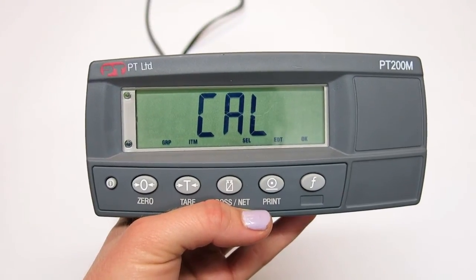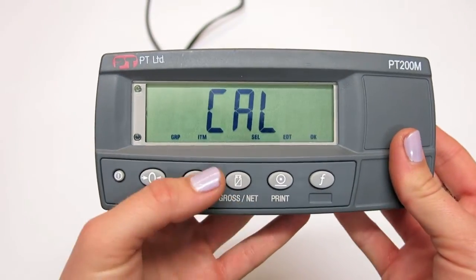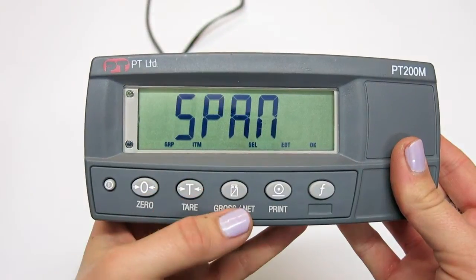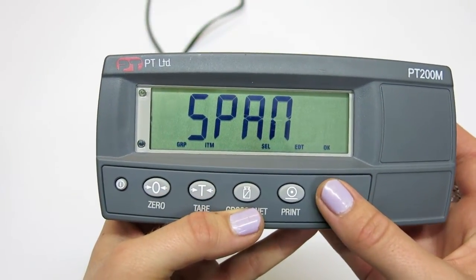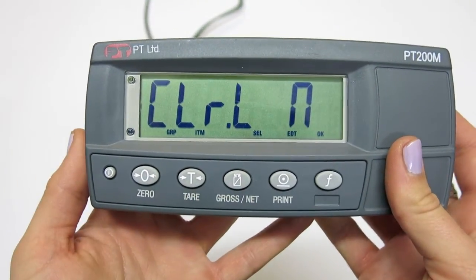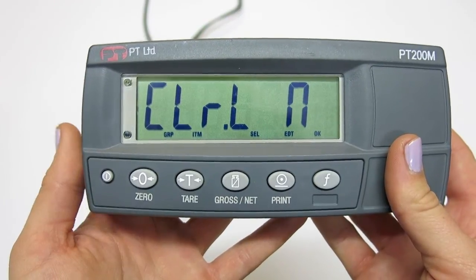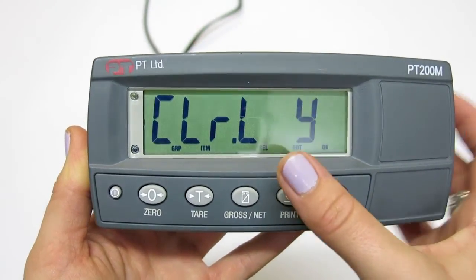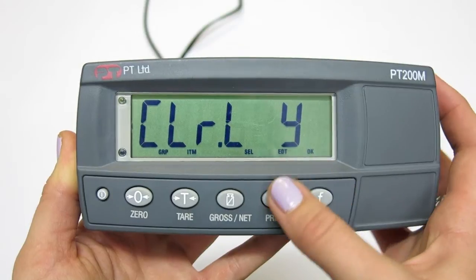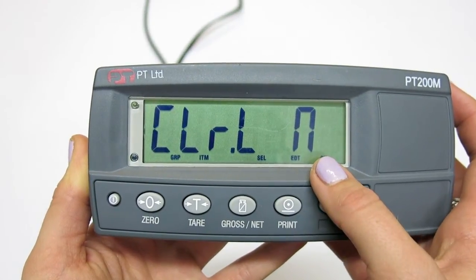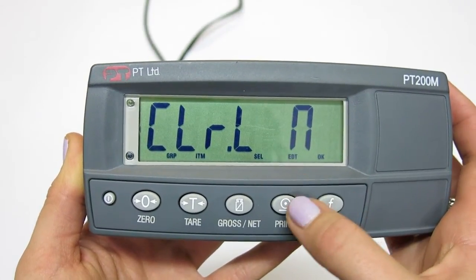For regular span calibration, find span in the calibration menu and press OK to select. The first option you come across is clear linearization. Select if you want clear linearization yes or clear linearization no using the print or edit button.